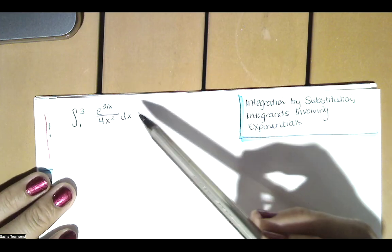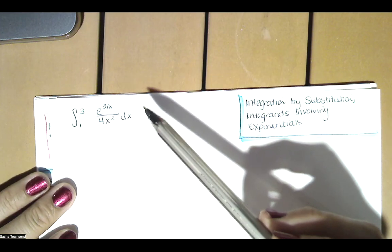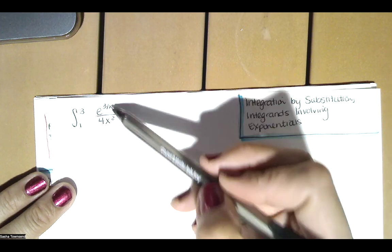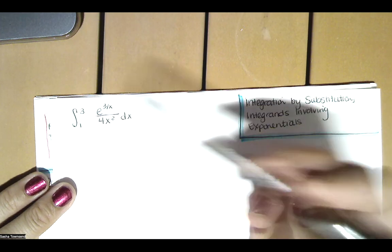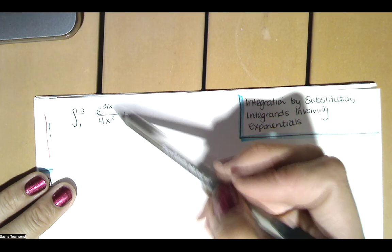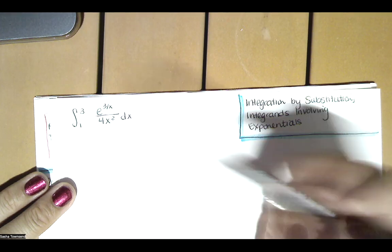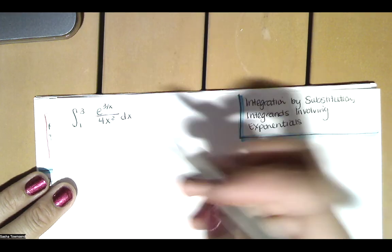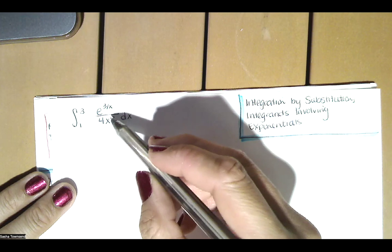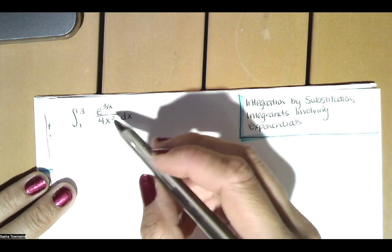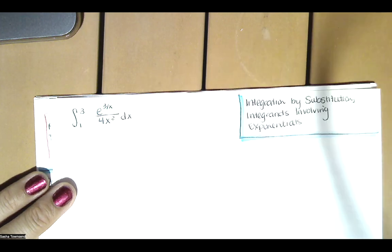So we've got this problem. We say to ourselves, do I have a rule for that? When I look at that integrand, I say no. I've got a quotient here. We don't have a quotient rule for antiderivatives. But given that I don't have a rule for that, we do have u-substitution. That's our most advanced technique so far.